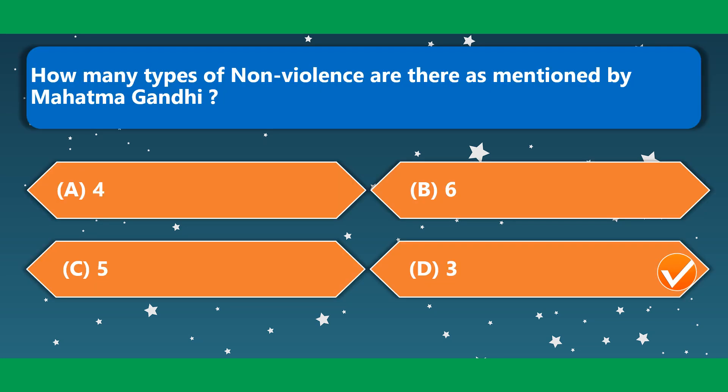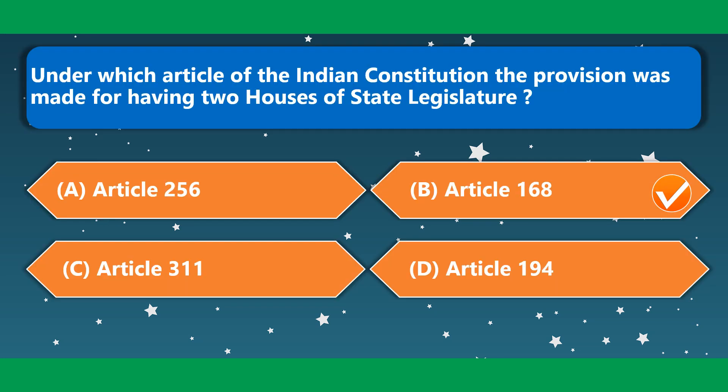How many types of non-violence are there as mentioned by Mahatma Gandhi? There are three types of non-violence mentioned by Mahatma Gandhi. Under which article of the Indian Constitution was the provision made for having two Houses of state legislature? It is Article 168.